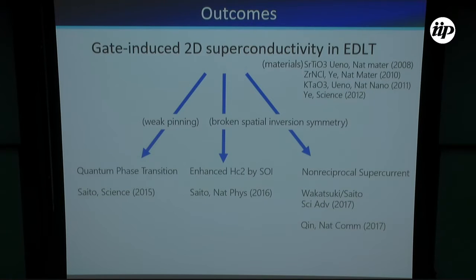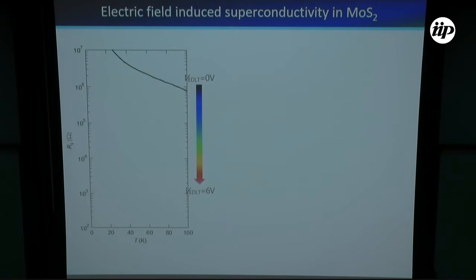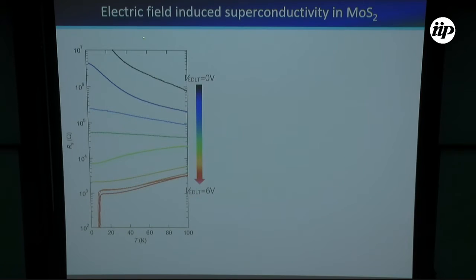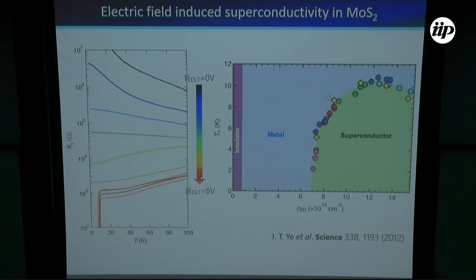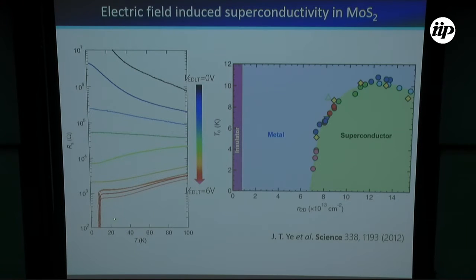Let me show you a textbook-like gate-induced superconductivity in MoS₂. This is the initial state without application of gate voltages. By simply applying gate voltages from 0 V to 6 V, you are able to tune the electronic state from insulating to metallic, and even to superconducting, just by tuning the voltage. You are also able to measure the Hall effect, which gives a very nice superconducting phase diagram.